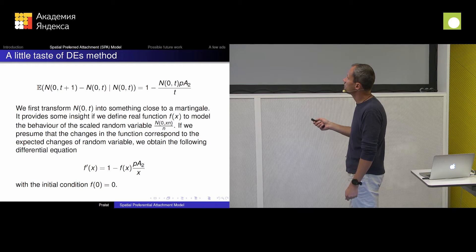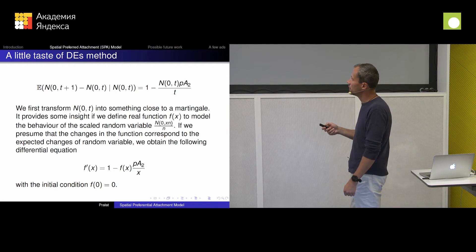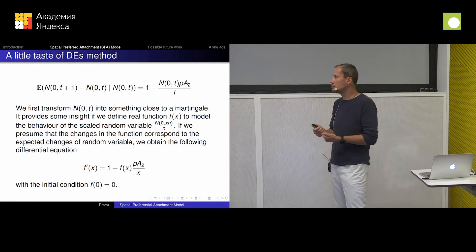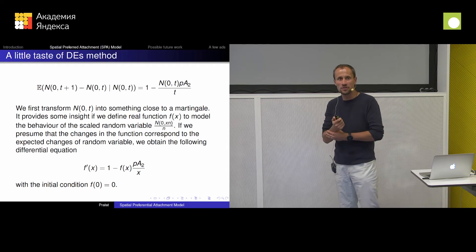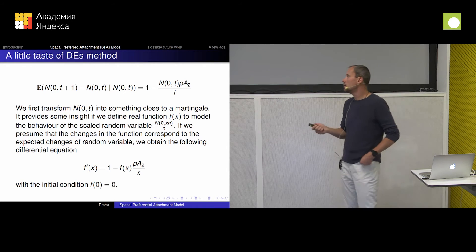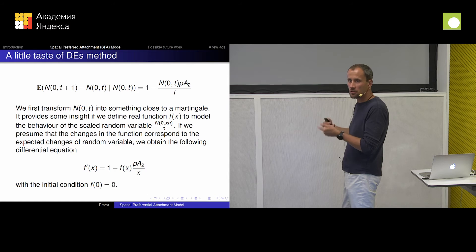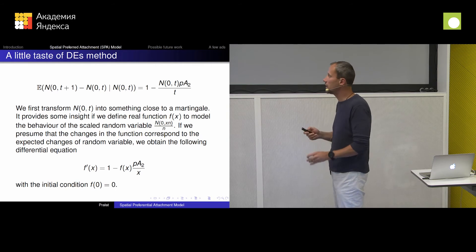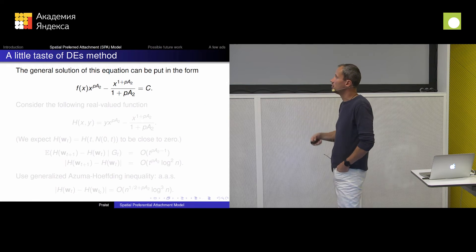Then I say: let's scale both the time and the random variable itself by n. Then I get a difference equation. And as n tends to infinity, I can try to model these things by a differential equation. So I get the differential equation — it's just a heuristic, no proof yet. But what we gain as intuition is that my random variables should behave like the solution to this differential equation. For more variables, of course, we have a system of differential equations. But for now I just have a simple function, and even I can solve it. That's the general solution.